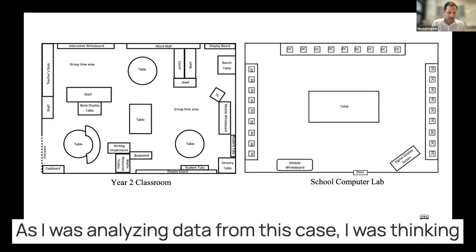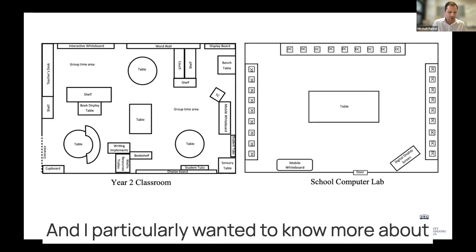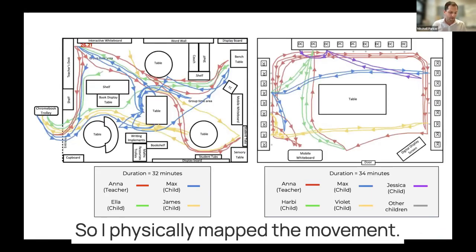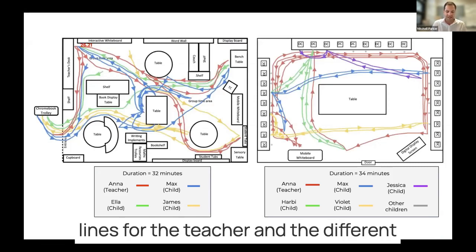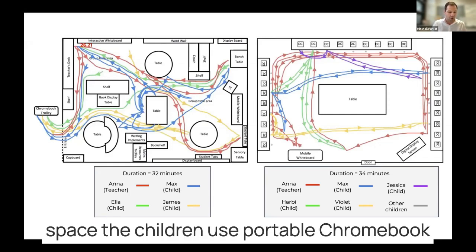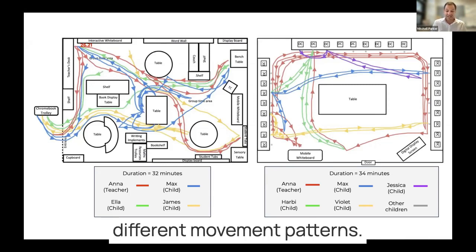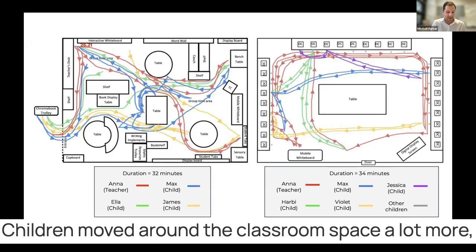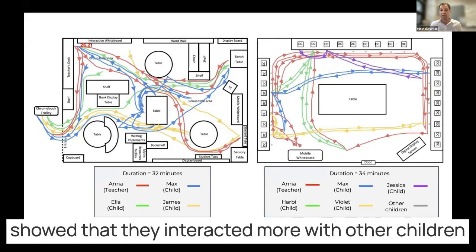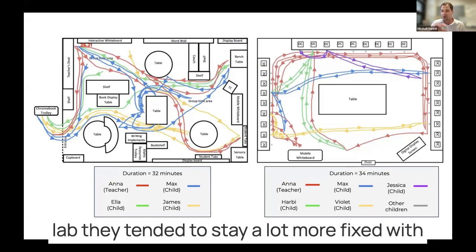As I was analyzing data, I was thinking about that theoretical frame — the people, resources, and processes within this space — and I particularly wanted to know more about the movement in these physical spaces. So I physically mapped the movement using different colored lines for the teacher and the different children, with arrows to show their trajectories. In the classroom, children used portable Chromebook devices for their writing, and in the computer lab they used fixed desktop computers. Children moved around the classroom a lot more, and the corresponding video data showed they interacted more with each other. In the computer lab, they tended to stay much more fixed.